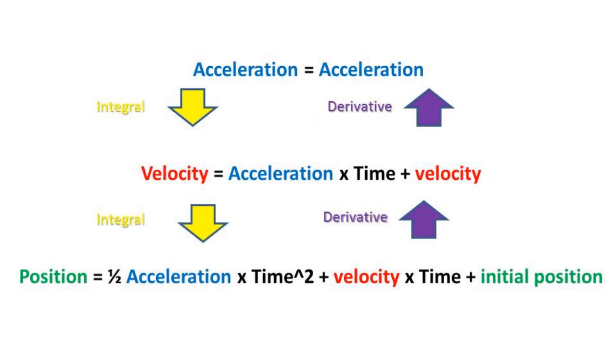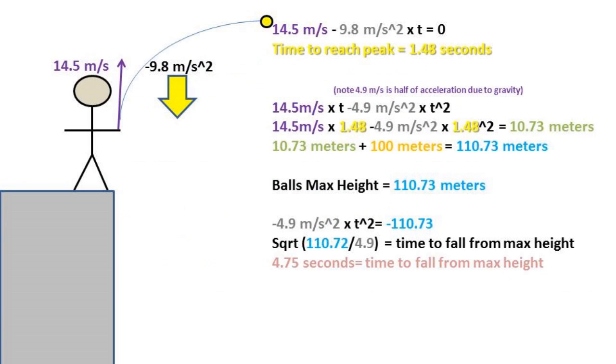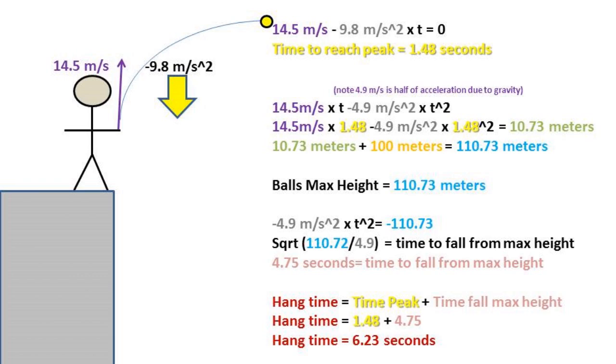Now to solve for how much time it takes to hit the ground from max height, we once again use the position formula with 4.9 meters per second squared and set it equal to the max height. After rearranging the formula, we get 4.75 seconds as the time for the ball to fall from the max height. Finally, we can take the time to reach the peak plus the time to fall from max height to give us our total hang time. Our total hang time equals 6.23 seconds.